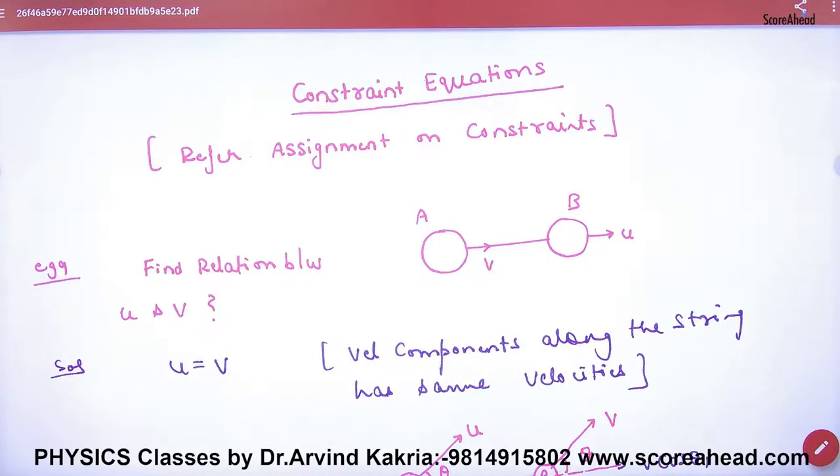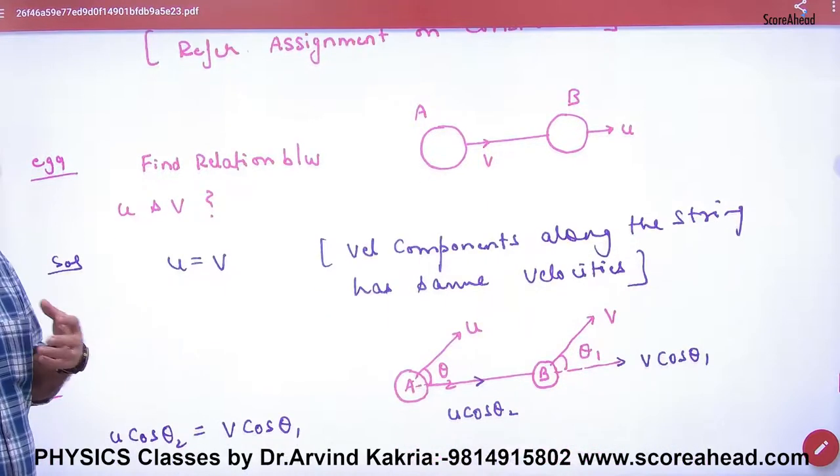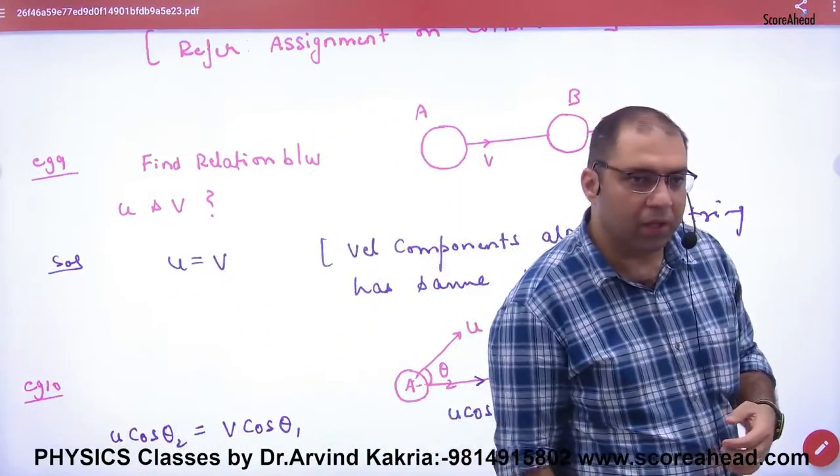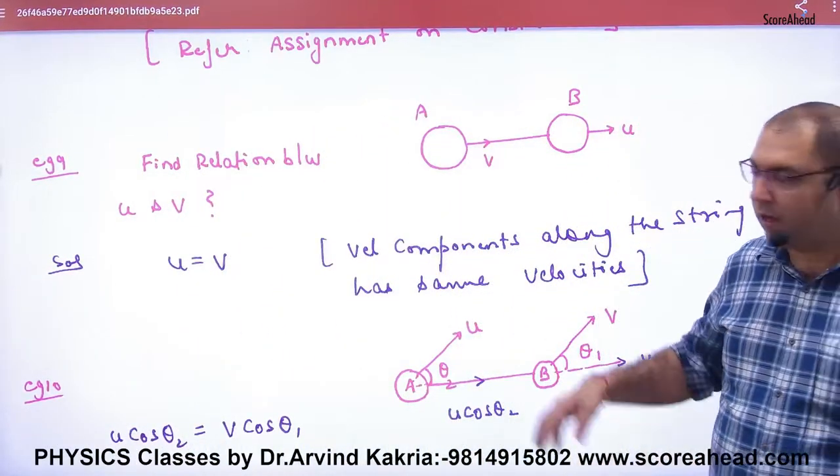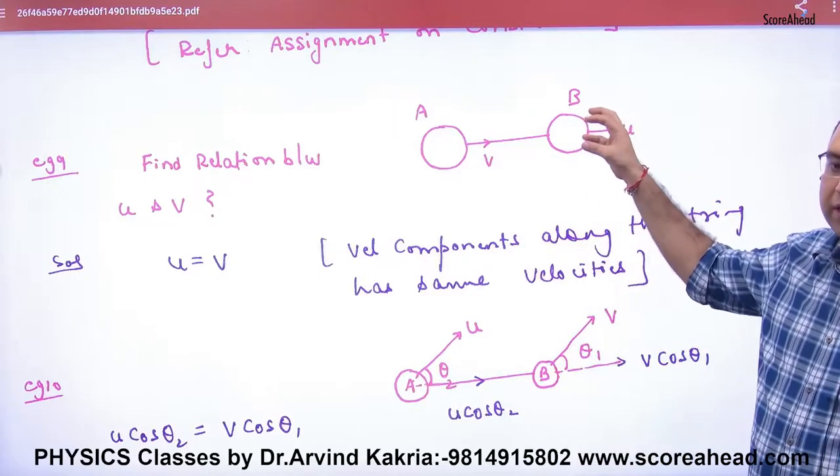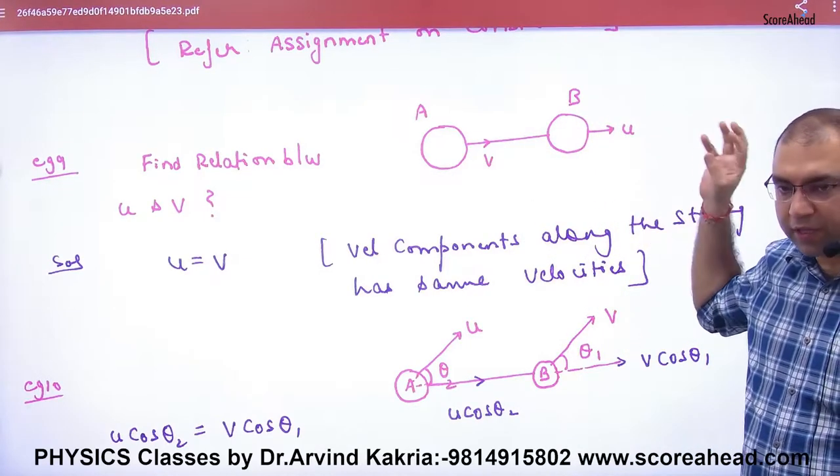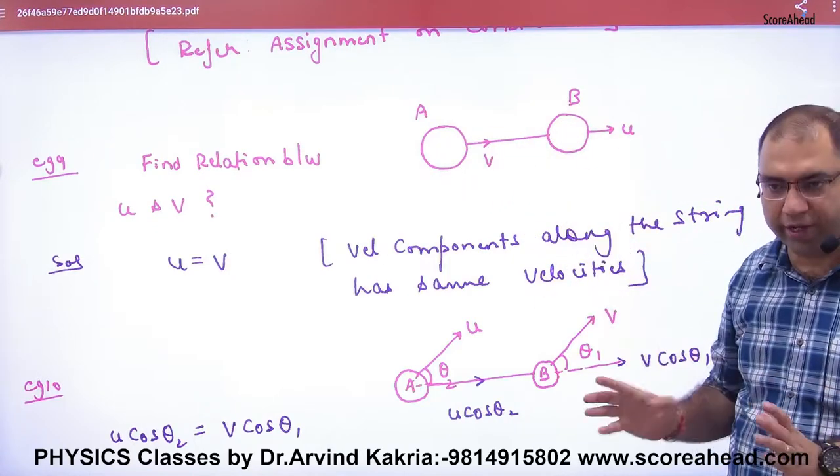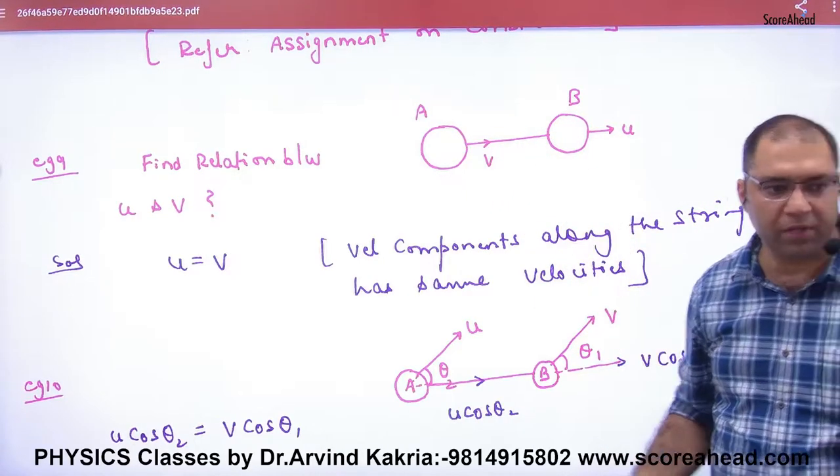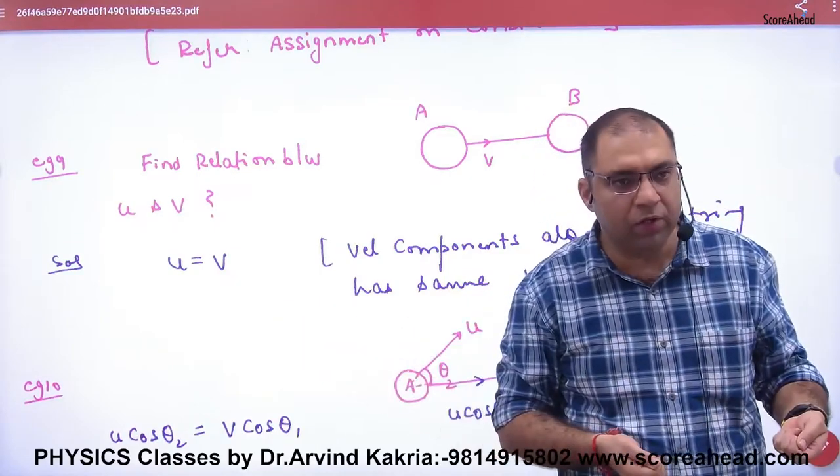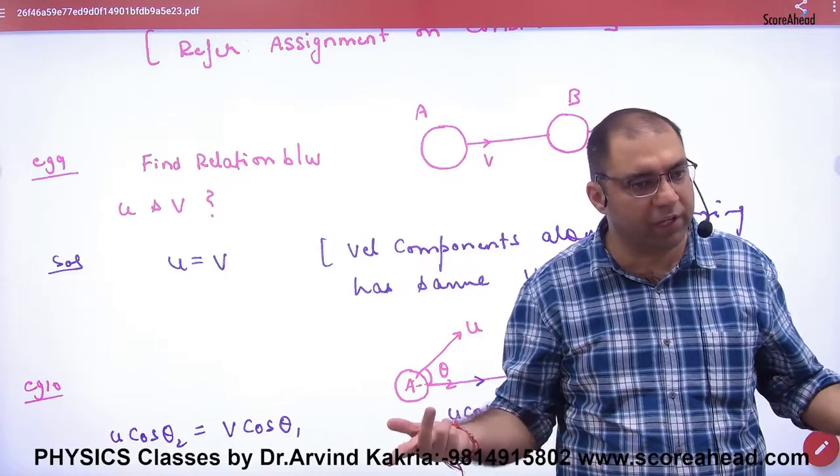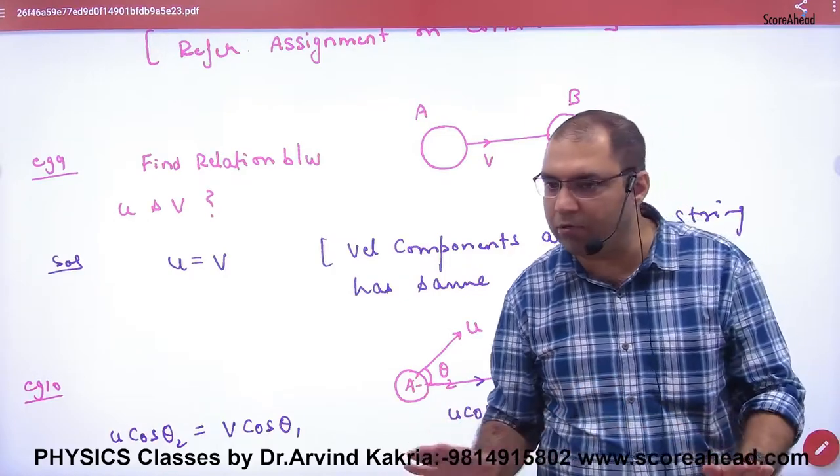Look, in constraint equations, you have a question where two balls or two blocks are connected with one string. If you move this with velocity u, then tell us if the velocity is v, what is the relation of v and u? If you pull up any system, the velocity will remain the same, then u and v is simple. There is no problem in this.